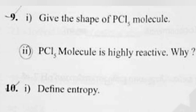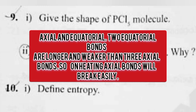Answer 2: It contains two types of bonds, axial and equatorial. Two equatorial bonds are longer and weaker than three axial bonds. So on heating, axial bonds will break easily.